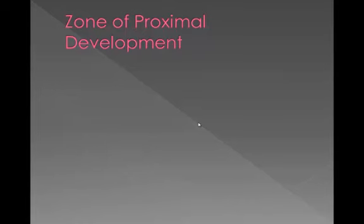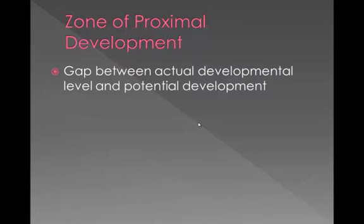Let's look at the zone of proximal development. The zone of proximal development is what Vygotsky identified as the gap between actual developmental level and potential development. Children have a level at which they can easily and comfortably solve problems, but above that is a level at which they can solve problems with assistance. We should be working within that zone, providing problems harder than a child can do on their own but that they can do with assistance — that's how development and learning occur.